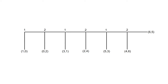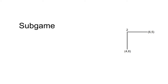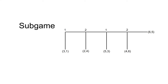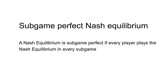Before examining this game, I will introduce the concept of a sub-game perfect Nash equilibrium. A sub-game is a part of a game that can be played as a game itself. It begins at a single node and contains every successor node. For example, this final stage of the centipede game is a sub-game, as is this subset of the game.